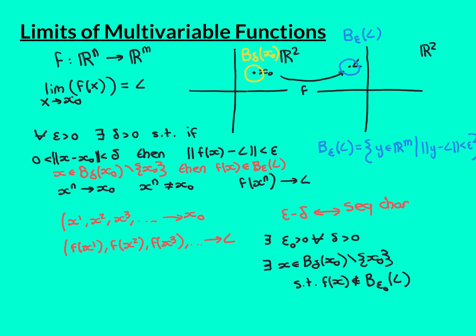For the third term, go to delta equal to one-quarter. Find a point in the quarter-radius deleted ball around x0 such that f of it is outside the epsilon-zero ball around L. Continue making delta smaller and smaller — one-eighth, one-sixteenth, and so on — building the terms of the sequence like this.